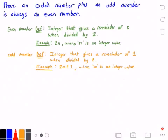Hey guys and welcome to this video where we want to prove or show that an odd number plus another odd number is always equal to or always equals an even number. Below I have the definition of what it means for a number to be even.